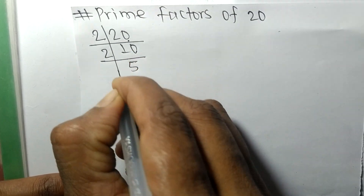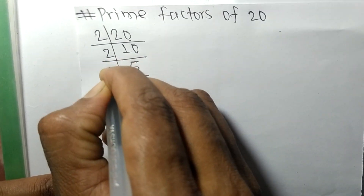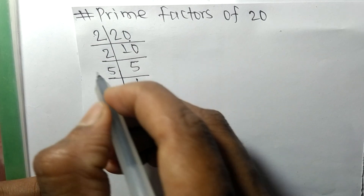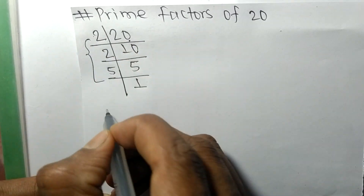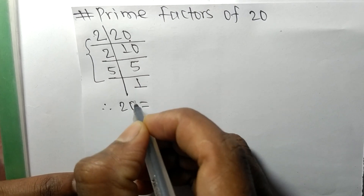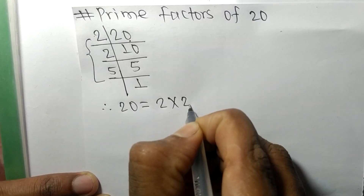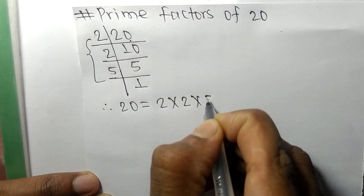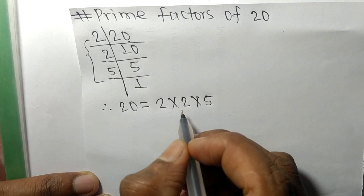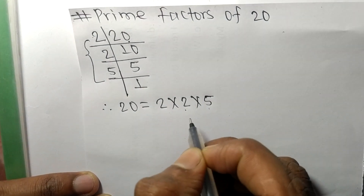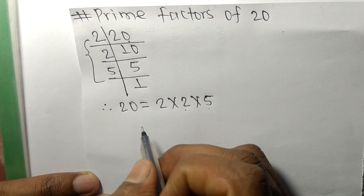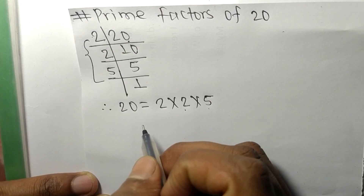And 5 times 1 equals 5. So from this we can write 20 is equal to 2 times 2 times 5. Therefore, 2 and 5 are the prime factors of 20.